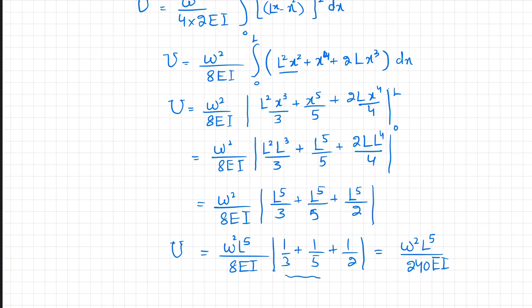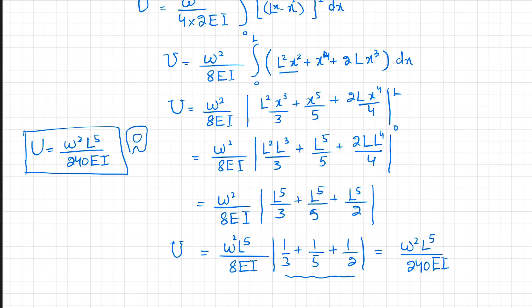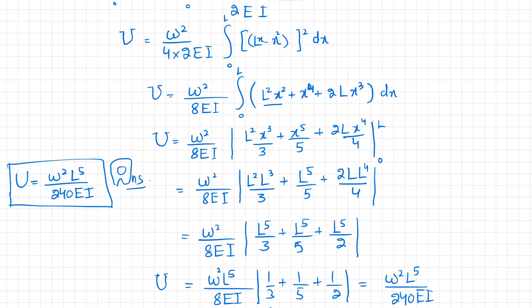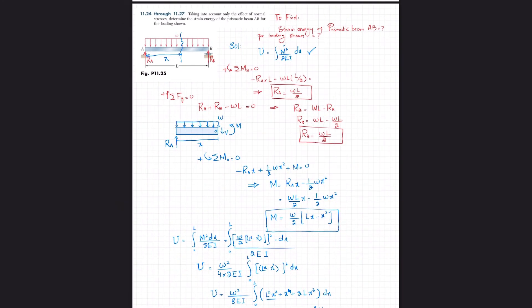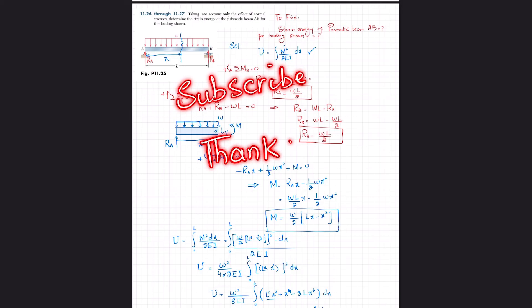So the total strain energy is U = w²L⁵/240EI. This is the strain energy for the loading shown on the prismatic beam. I hope you enjoyed the video — be careful while putting in values because a little mistake will make the whole problem wrong. If you are new to my channel, subscribe and keep watching the videos. Thank you.